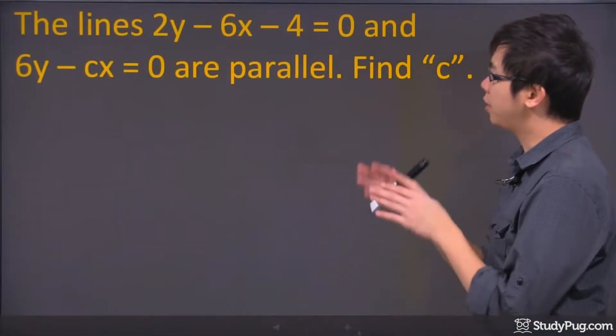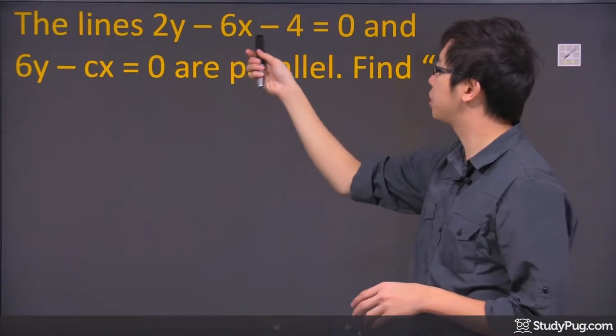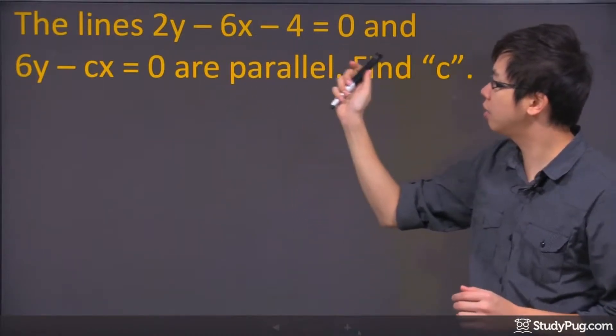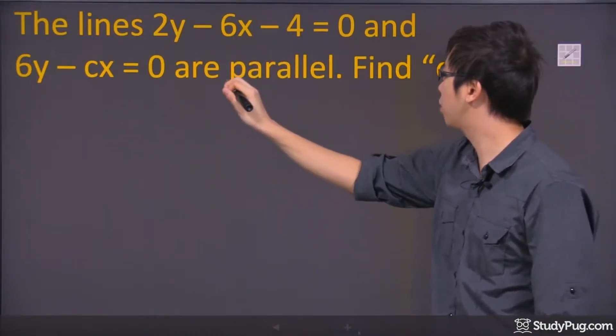Hi, welcome to this question right here. So we got the lines 2y minus 6x minus 4 equals 0, and this one over here, they are parallel to each other.